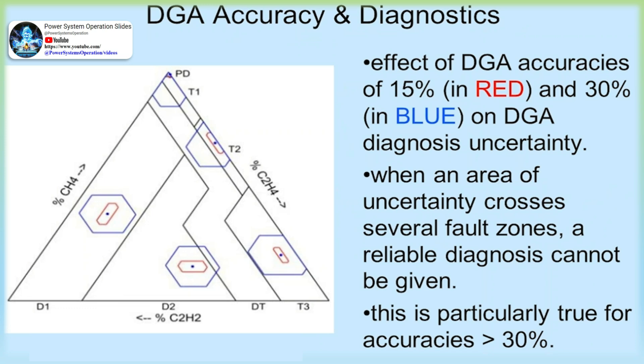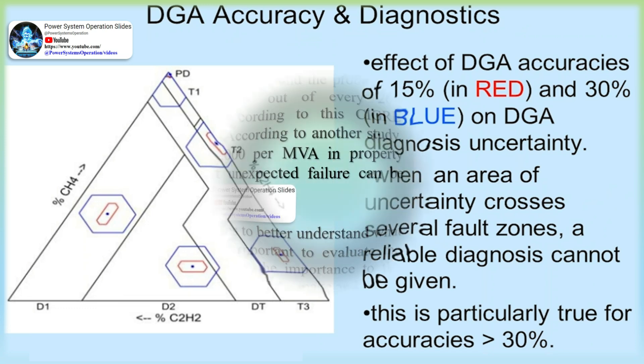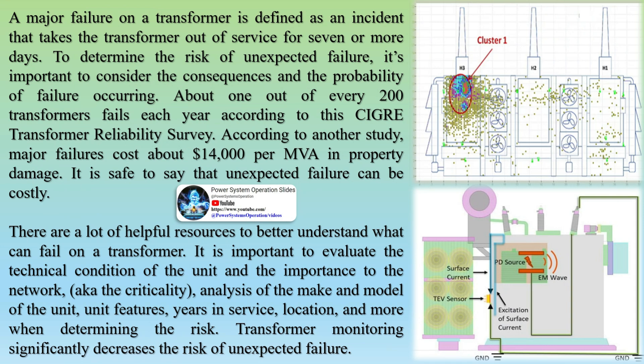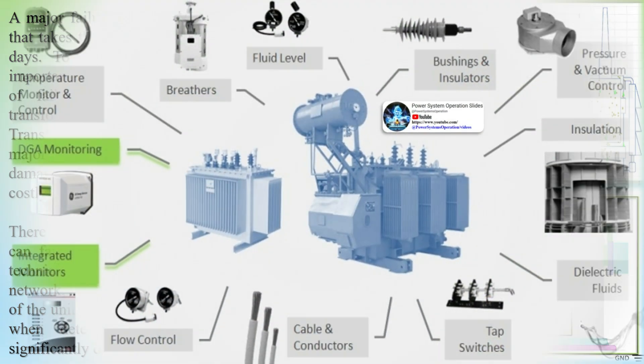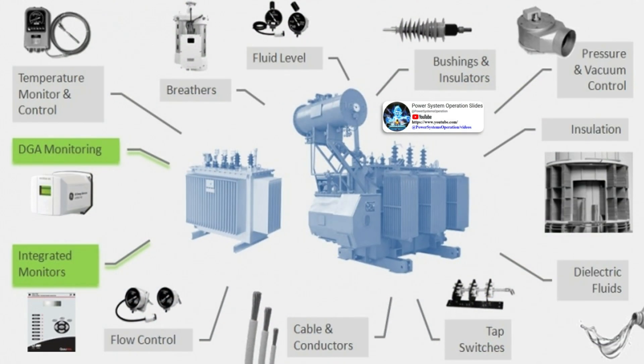Transformer monitoring significantly decreases the risk of unexpected failure and can assist in extending the life and performance of a transformer. A fleet-wide, whole-of-life methodology offers a broader evaluation of the transformer environment, addressing the interrelated planning, operational, and risk factors that impact transformer performance. This paves the way for better decision-making, greater asset security, and lower total cost of ownership. Dissolved Gas Analysis (DGA) is recognized as one of the most effective monitoring and diagnostic tools for asset owners.